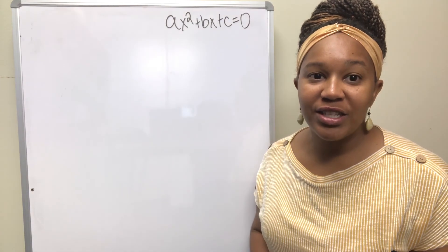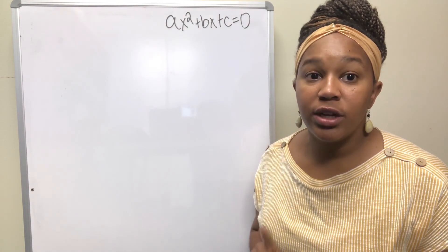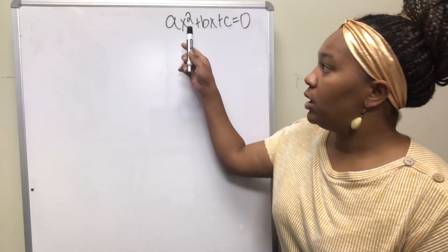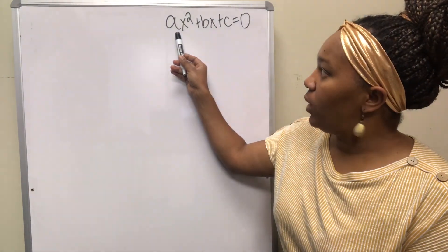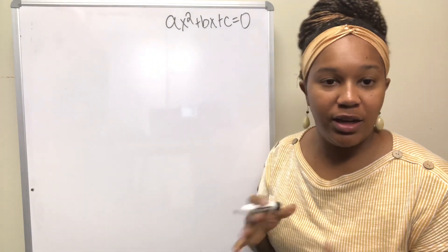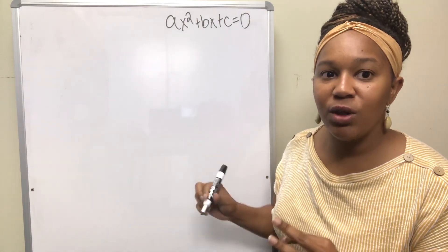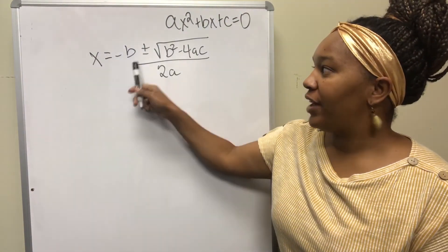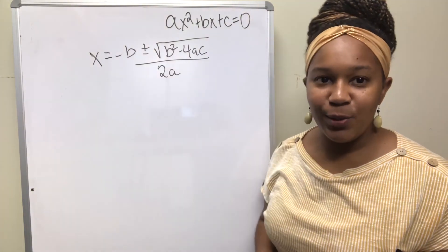Now we're going to look at how to solve a quadratic equation using the quadratic formula. The quadratic formula is a direct result of the completing the square method. Someone took that method and used it to solve the general form of the quadratic equation — they went through each step with A's, B's, and C's, and the result was the quadratic formula: x equals negative B plus or minus the square root of B squared minus 4AC, all over 2A.